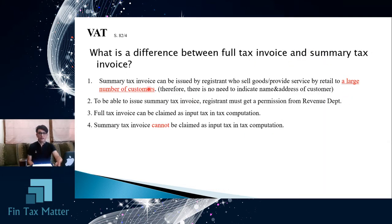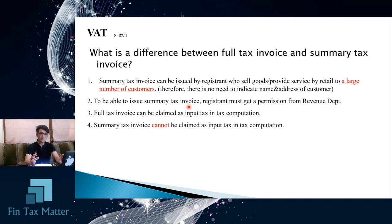The differences are: first, the summary tax invoice can be issued by a registrant who sells goods or provides service at retail to a large number of customers. Second, to issue a summary tax invoice, the registrant must get permission from the Revenue Department — by default, all registrants must issue the full tax invoice only. Third, the full tax invoice can be claimed as input tax, but the summary tax invoice cannot be used for that purpose.